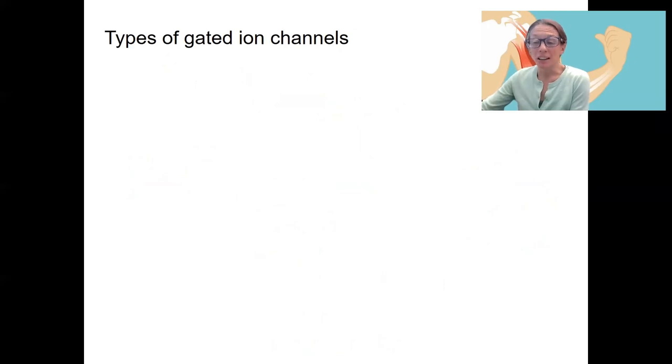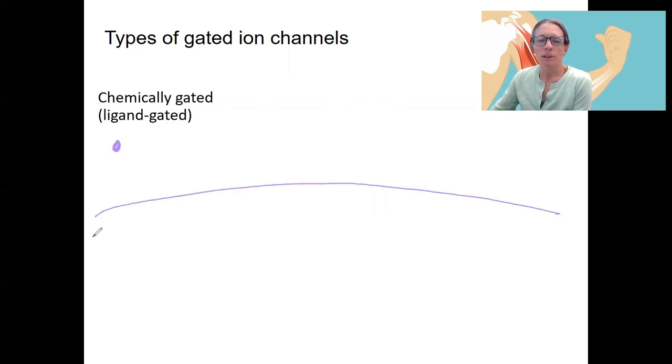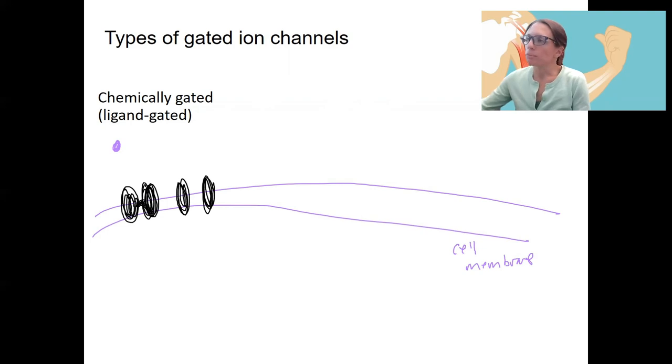One is a ligand binding to a channel. So you can have a ligand. Let's actually just draw these here. Here's my cell membrane. That's a ligand. Then we've got in the membrane a channel. It's closed. But when that ligand binds to it, it's going to open. Let's add the ligand that needs to bind. This is over time. T1, T2.